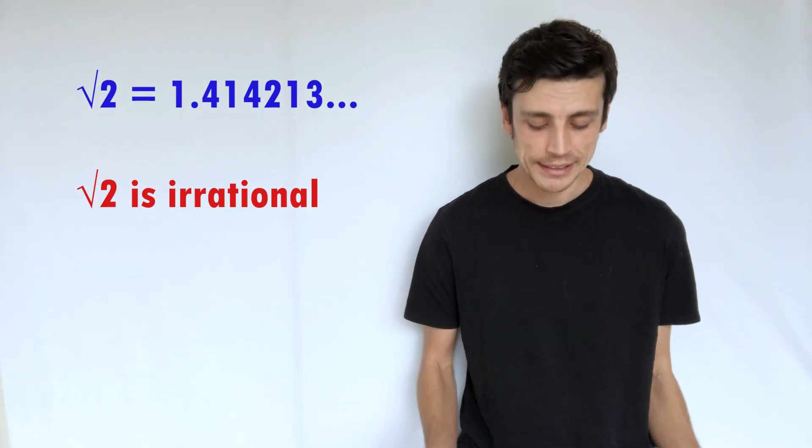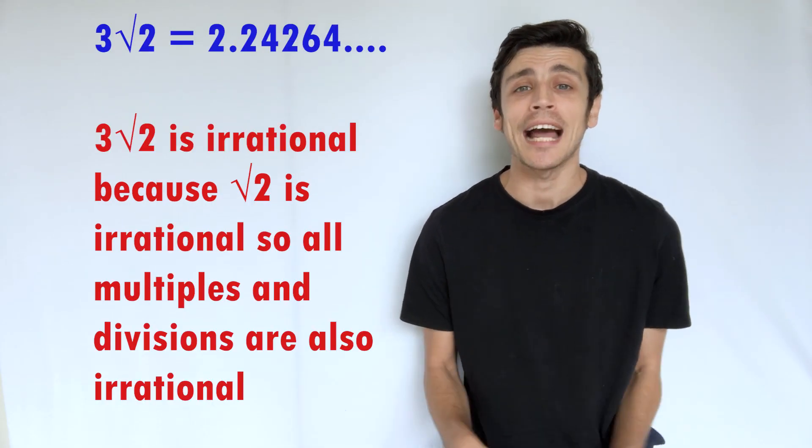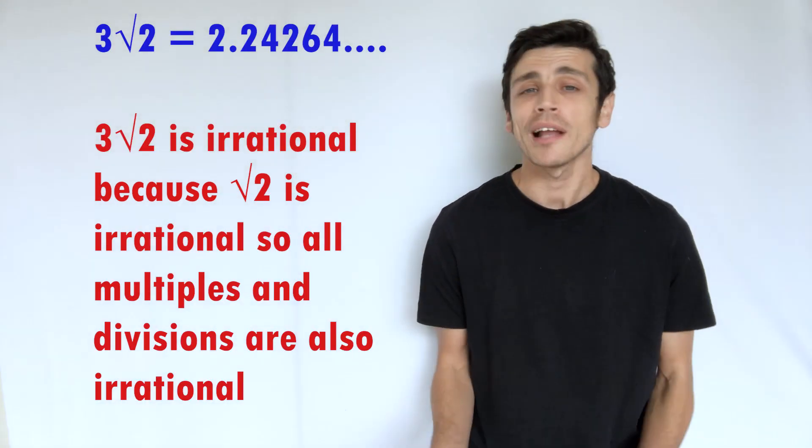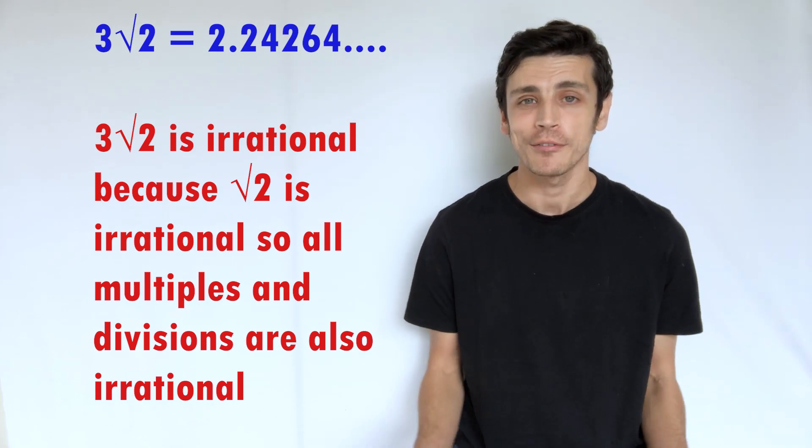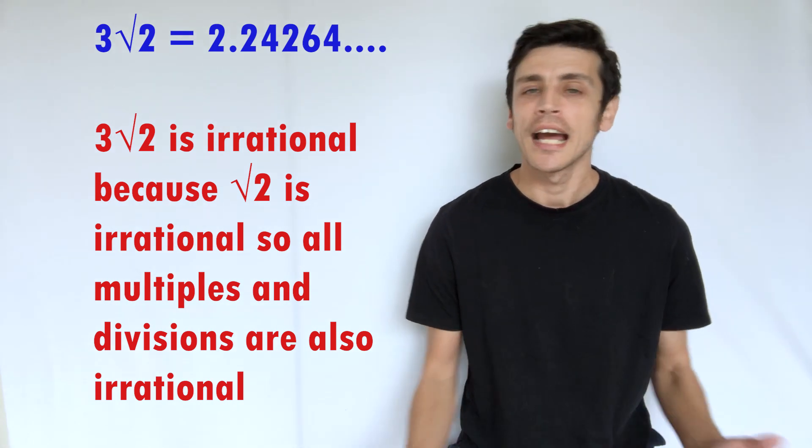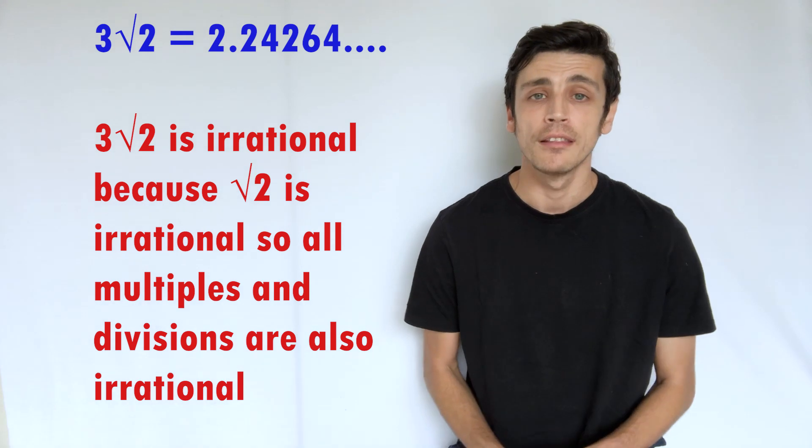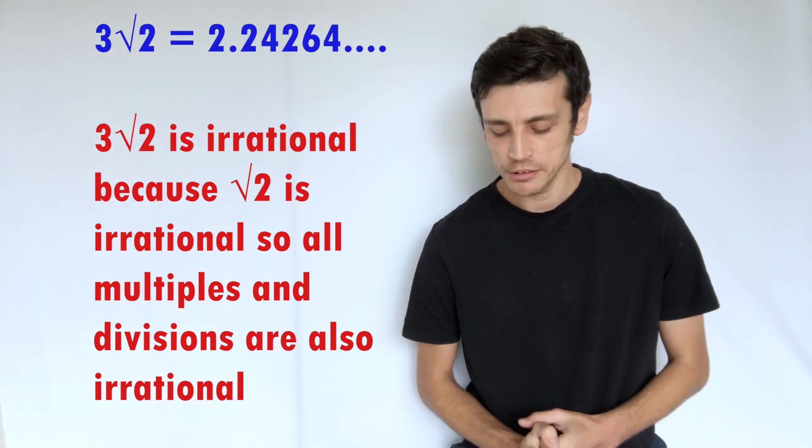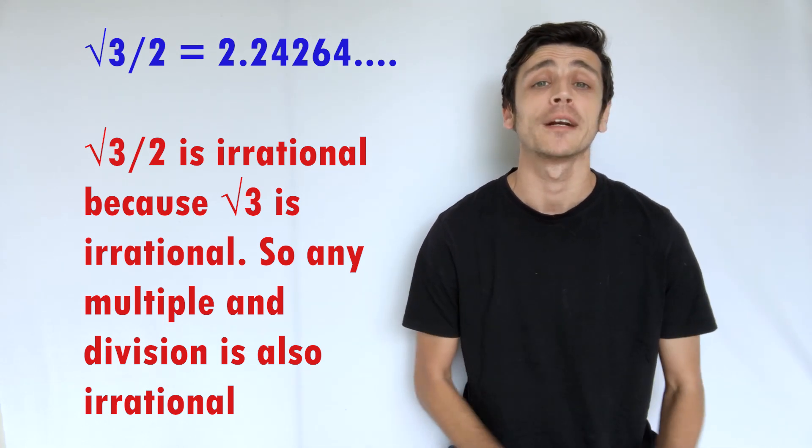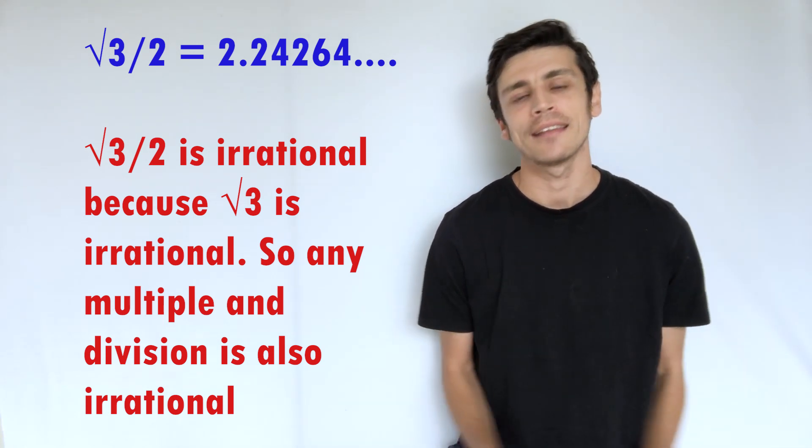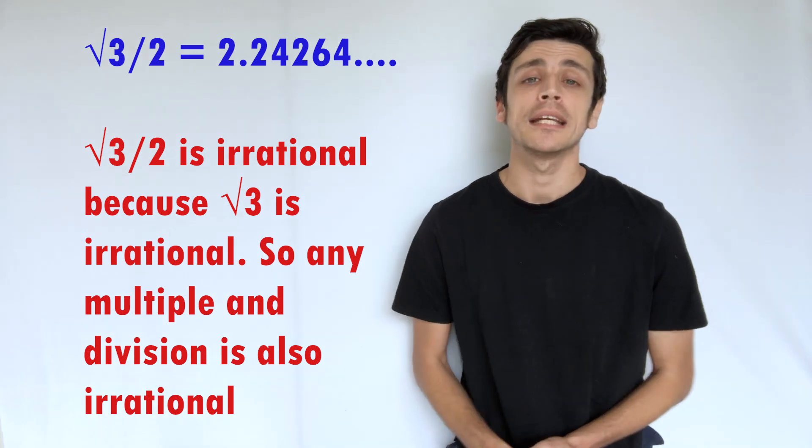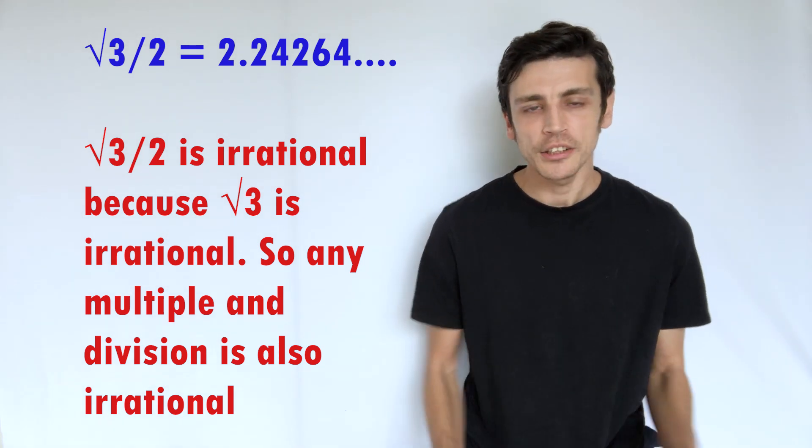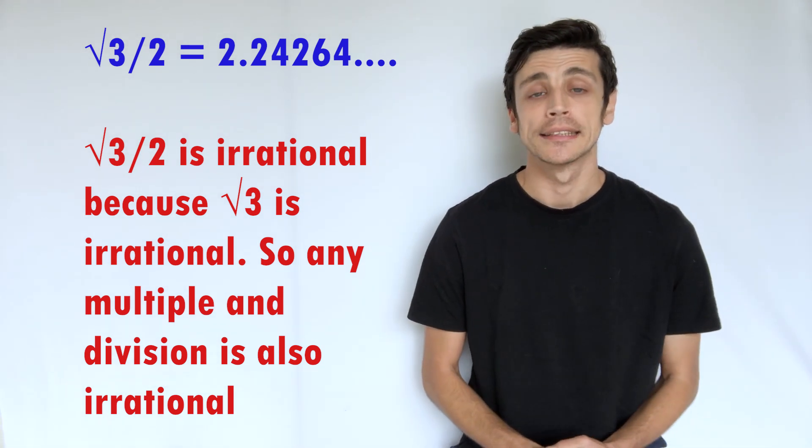You can also have numbers that can get a bit crazy. So you can have like 3 multiplied by the square root of 2. So this is another surd. Again, that won't be represented in the form of a fraction, so that one also would be irrational. And the same as well if you had say the square root of 3 divided by 2. Again, this would also be irrational because it can't be represented as a fraction.